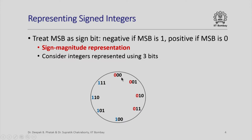As unsigned integers the 3-bit sequences represent 0 through 7 arranged around the circle. Now interpreting these as signed magnitude: the MSB-0 sequences are plus 0, plus 1, plus 2, plus 3, and the MSB-1 sequences are minus 0, minus 1, minus 2, minus 3.